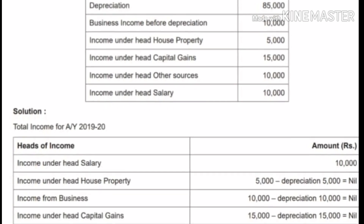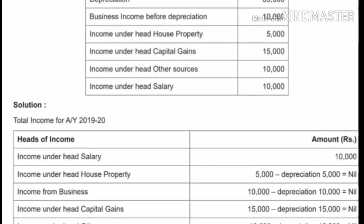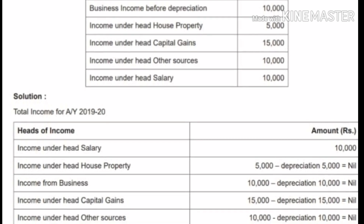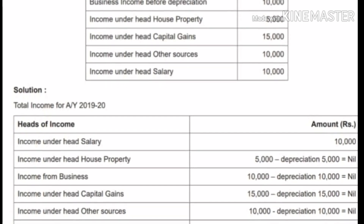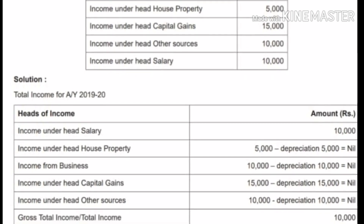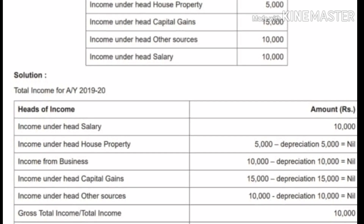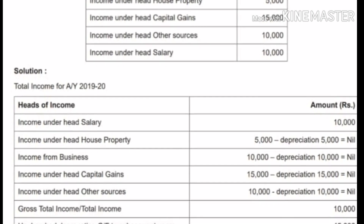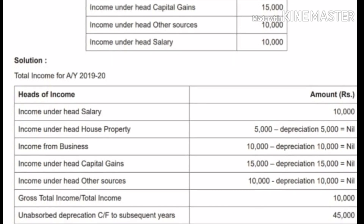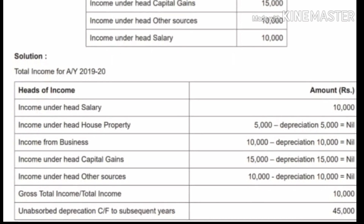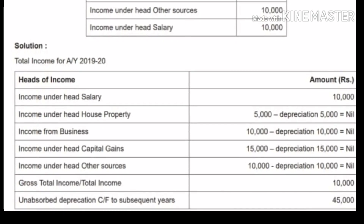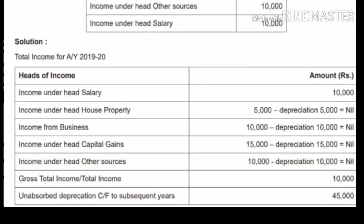Income under the head salary: ₹10,000 — unabsorbed depreciation cannot be set off against salary. House property ₹5,000 less depreciation set off: nil. Business income ₹10,000 less depreciation set off: net income nil. Capital gains ₹15,000 less depreciation ₹15,000: net capital gain nil. Other sources ₹10,000 less depreciation ₹10,000: net income nil. Grand total income is ₹10,000, and still unabsorbed depreciation remaining is ₹45,000.